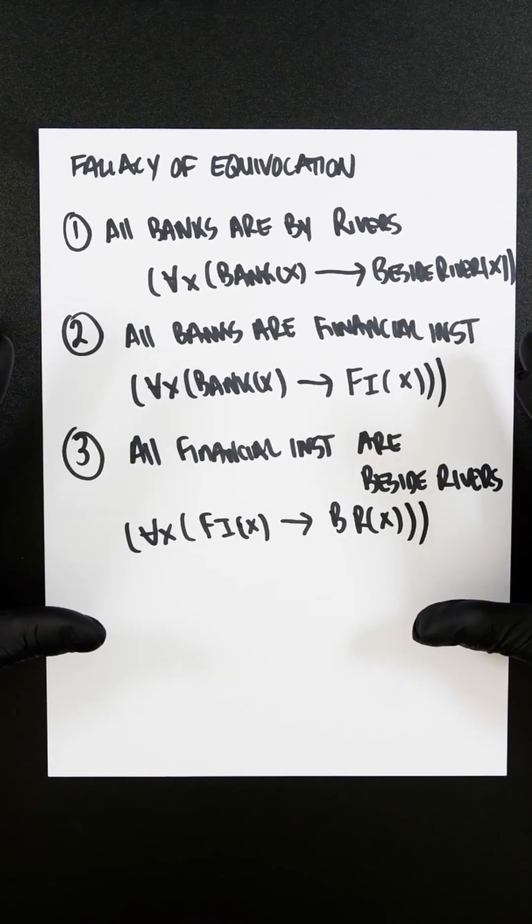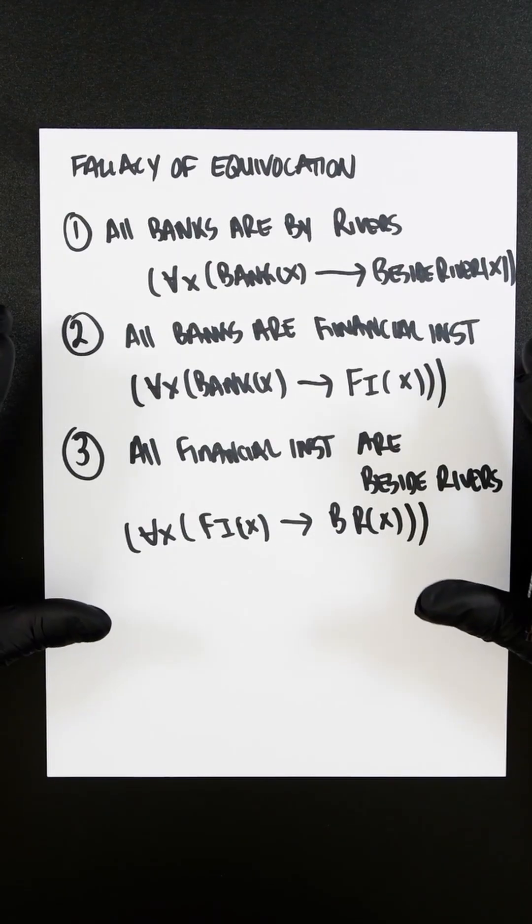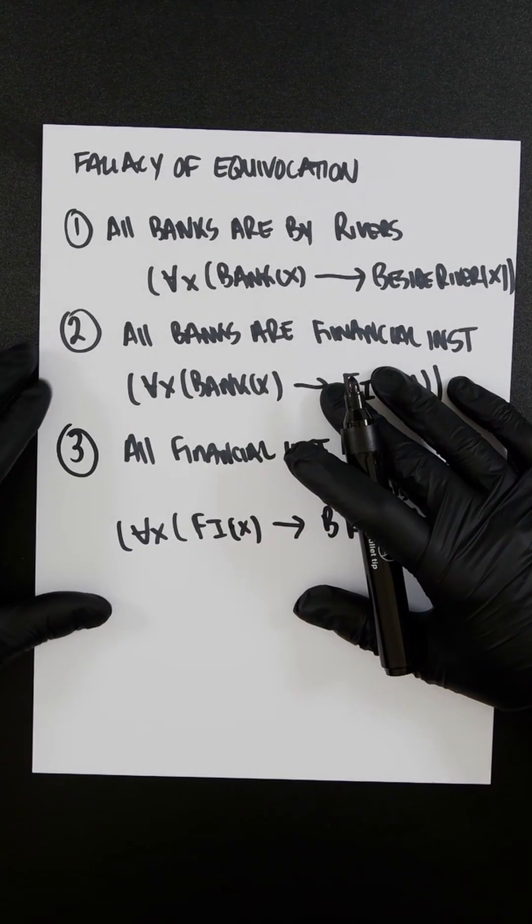So hopefully that expresses how equivocation arguments are a fallacy, and that's it represented in predicate logic.